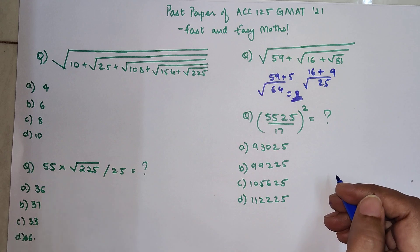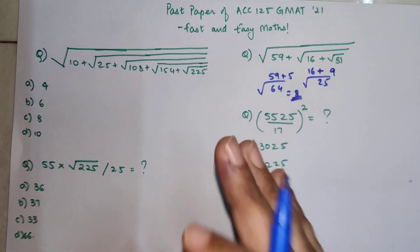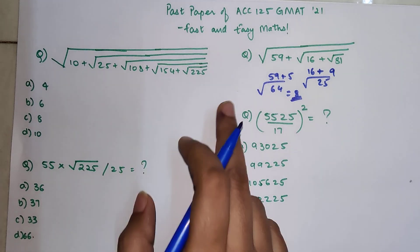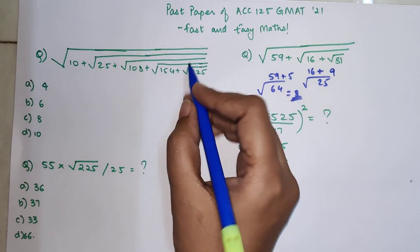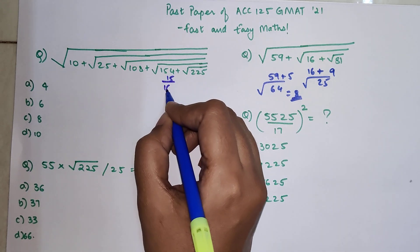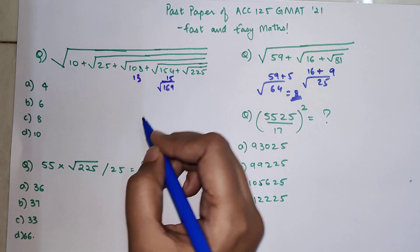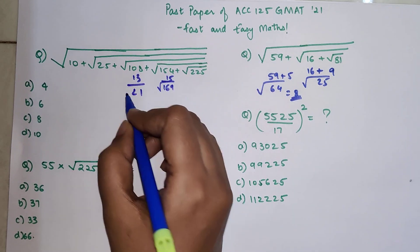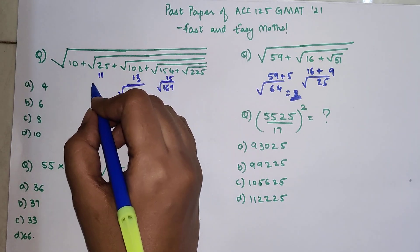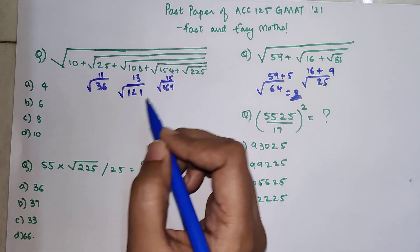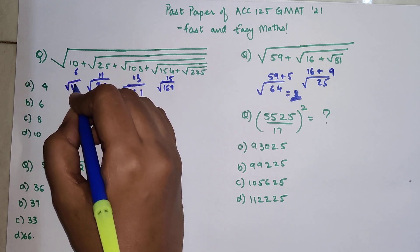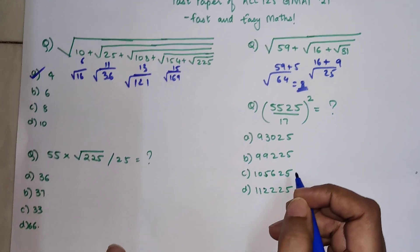If you find this difficult, take a pause, grab a pen and paper, and solve it. For those who have understood, please try to solve the next one on your own — trust me, it is super simple. Root of 225 is 15; add 15 to get 169, and root of 169 is 13. Add 13 to get 121, root of 121 is 11. Add to get 36, root of 36 is 6. So 10 plus 6 is 16, and root of 16 is 4 — answer is option A.